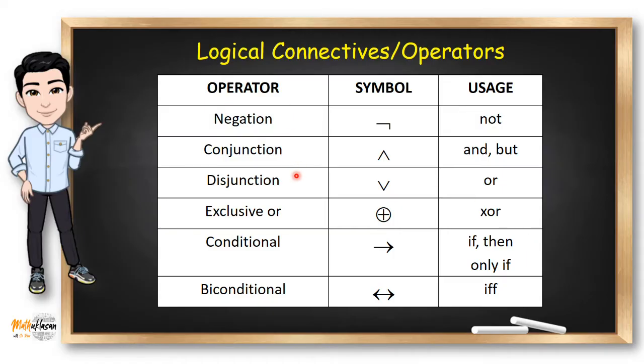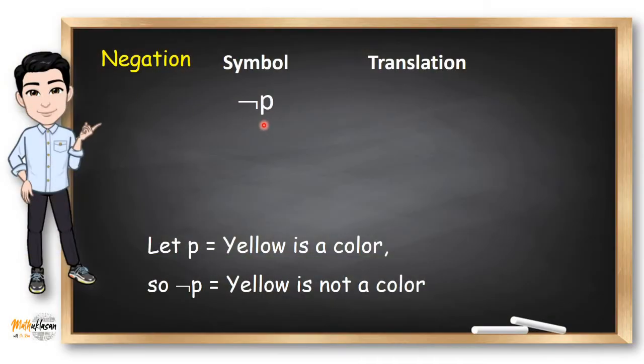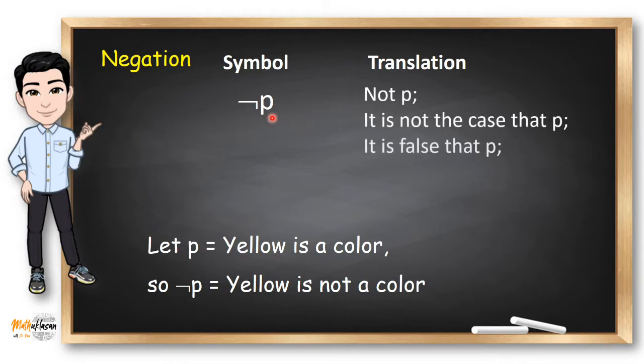Negation, conjunction, disjunction, exclusive or conditional, and biconditional. Negation in symbol is like this. So we read this as not P, it is not the case that P, it is false that P, or it is not true that P. And how do we use the translation? Well, it depends upon the English translation that you will do on a particular proposition. For example, let P be the proposition, yellow is a color. So it is better to write not P in English as yellow is not a color.